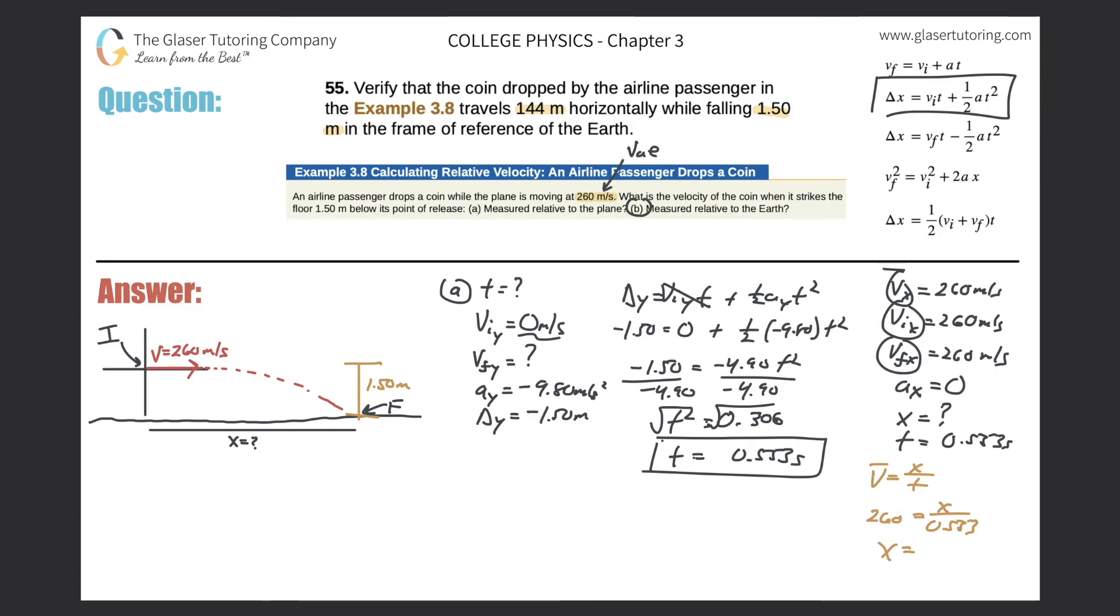And if we round that appropriately considering three significant figures, guess what we come out with? 144 meters. And it says verify that the coin dropped by the airline passenger in that example travels 144 meters horizontally, and we just did it. All right guys, thanks for tuning in, hope this helped. Please remember to subscribe and I will see you in the next lesson.